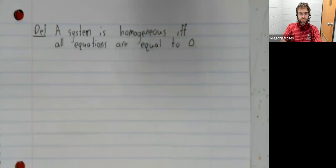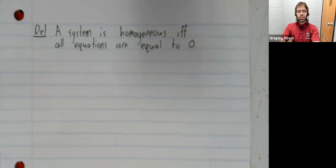In this video, we'll define and begin to discuss homogeneous systems of linear equations. A system is homogeneous if all of the equations are equal to zero.